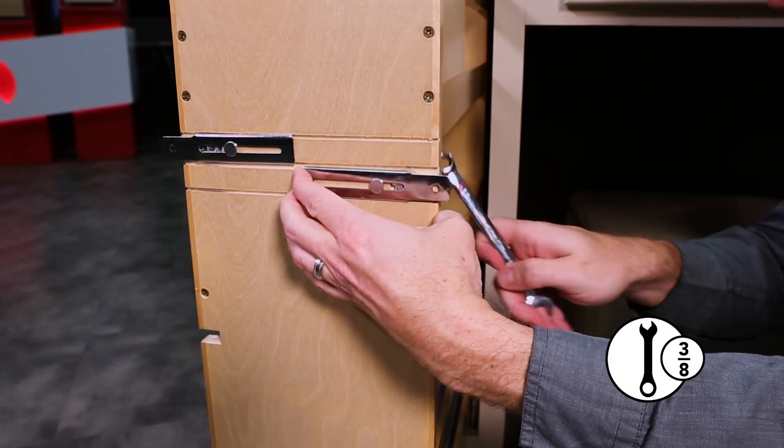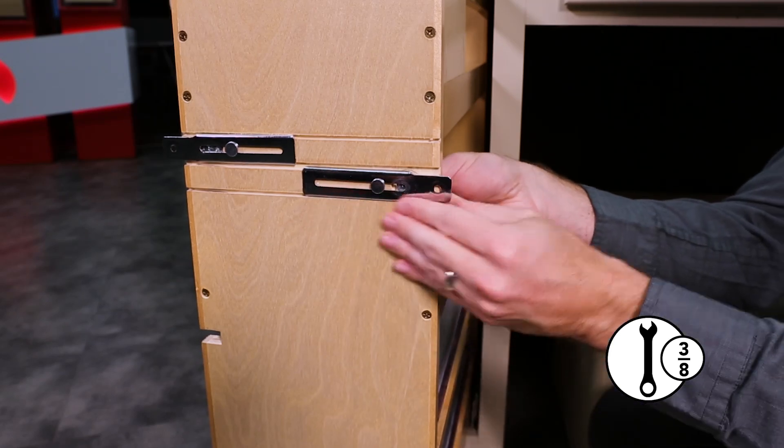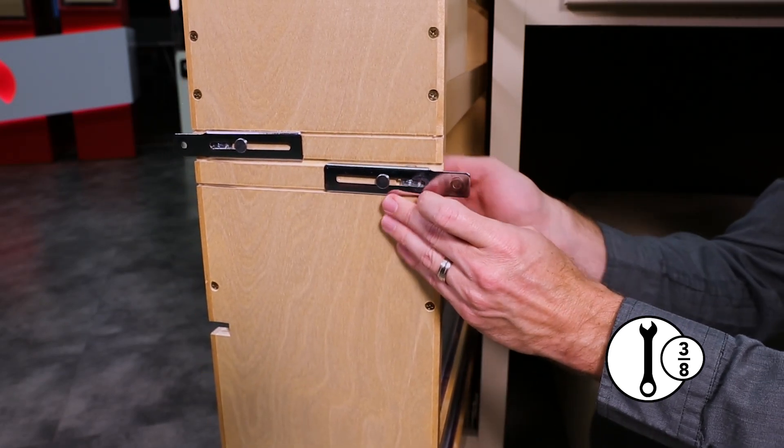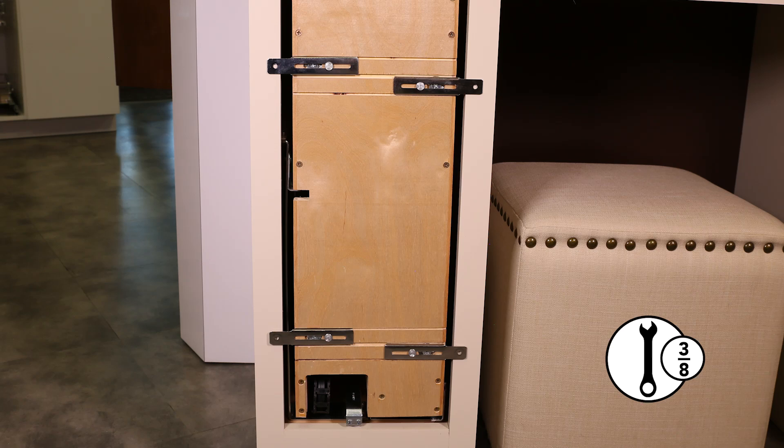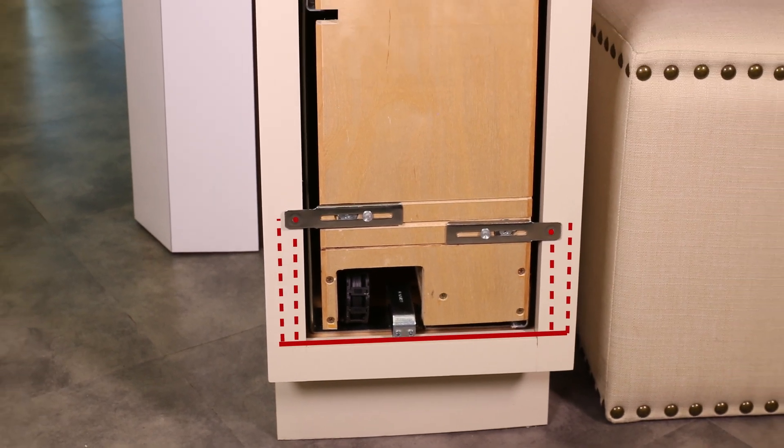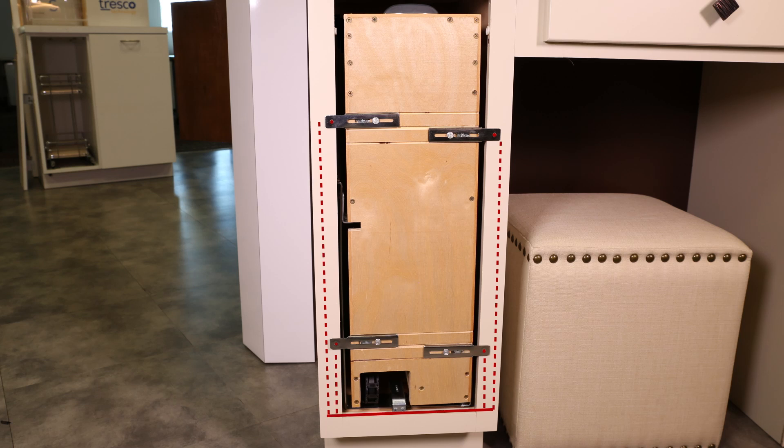Use your 3/8 inch wrench or nut driver to loosen the four lock nuts located inside the front wall of the unit. Extend the adjustable mounting brackets just over the face frame's edge. Measure the distance from the bottom edge of the opening to the slotted holes and record those values.